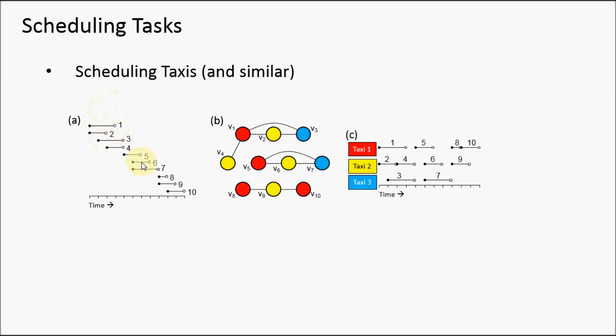Here we have a series of bookings. Each of these bookings can be represented as a vertex, and then edges occur between any pair of vertices that are overlapping in time. For example, one overlaps in time with two, three, and four, but not anything after that.